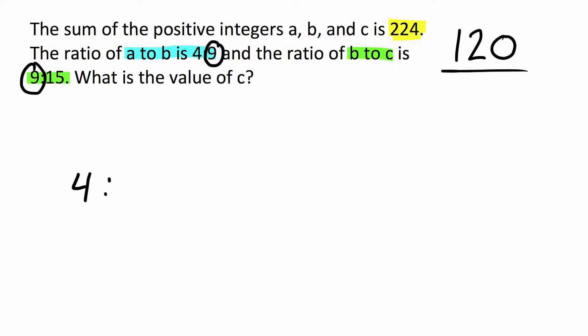So, we have 4 to 9 to 15. You see how the 9 is kind of the joiner for the 4 to 9 and the 9 to 15. Because this is A, 9 is always B, and 15 is C. So there's our ratio. Now, we know that our total is going to be 224 when we find the sum.